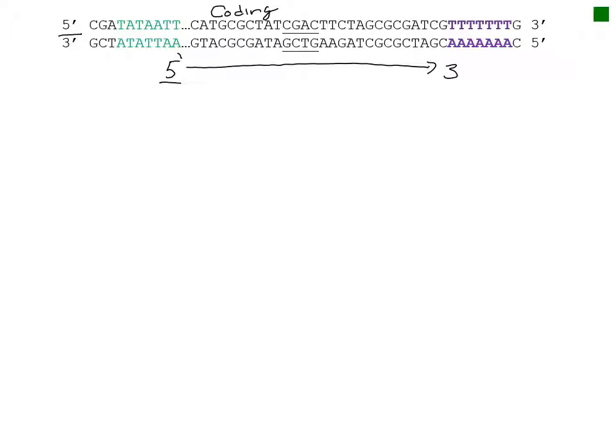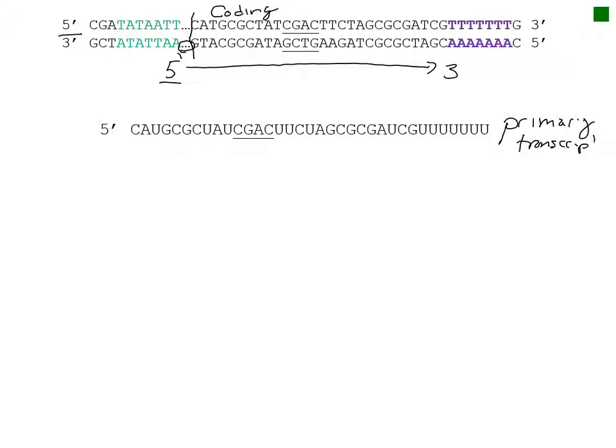To transcribe the primary transcript, I will start 10 to 25 nucleotides downstream from the promoter, which remember in this is represented by the dot dot dot. Thus, this is our start site for transcription. Transcription will occur by copying the coding strand, being sure to replace any thymines with uracil. Transcription will continue until the end of the terminator sequence. Be sure to note that this is the primary transcript, and so it still contains the intron sequence.